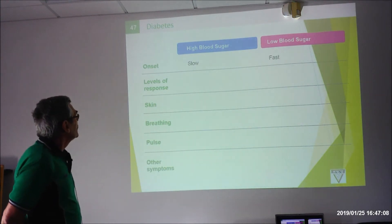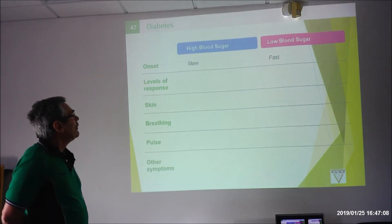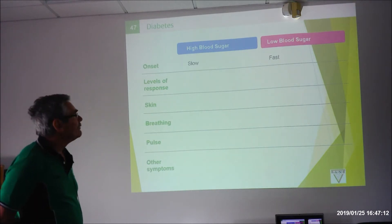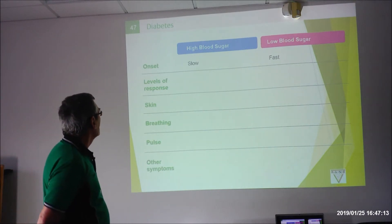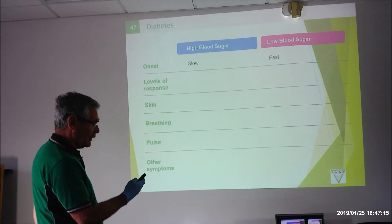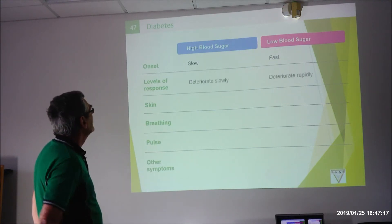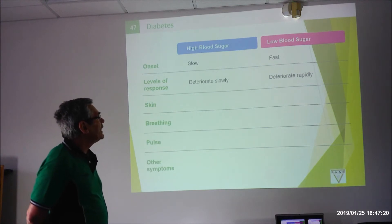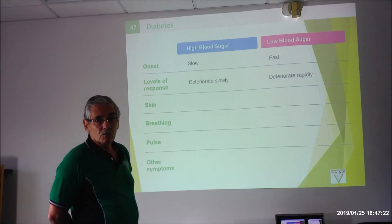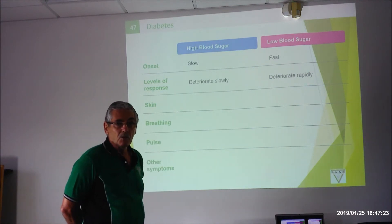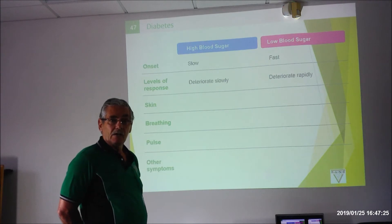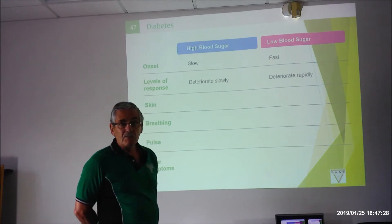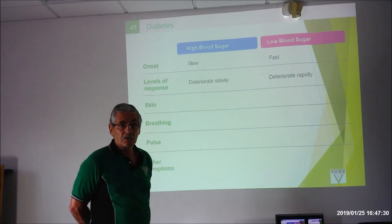High blood sugar comes on slowly; low blood sugar comes on very fast — remember, one minute to an hour. In terms of how they respond: the high blood sugar patient will deteriorate slowly, while the low blood sugar patient will deteriorate rapidly. Your hypoglycemic patient will be acting totally out of character and could even become violent towards you.